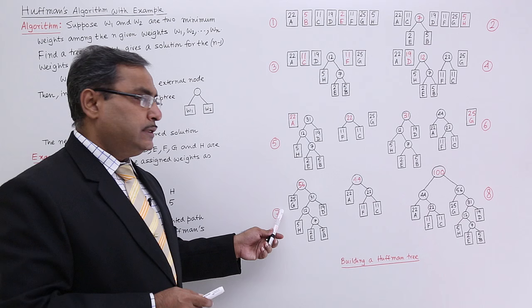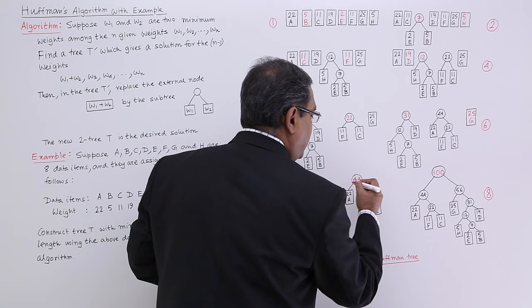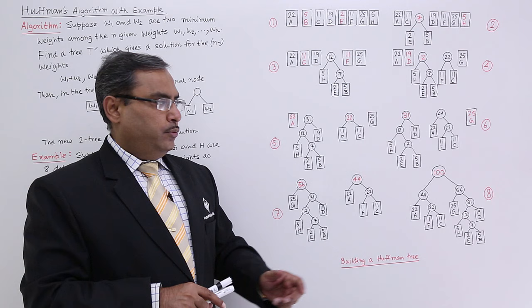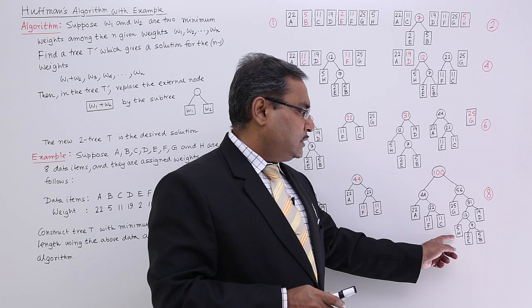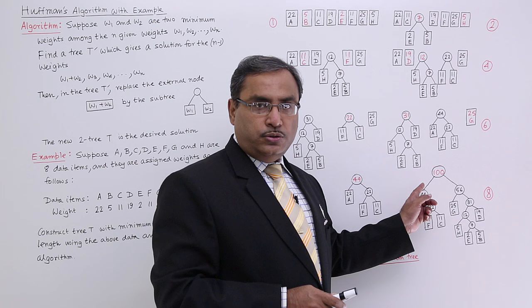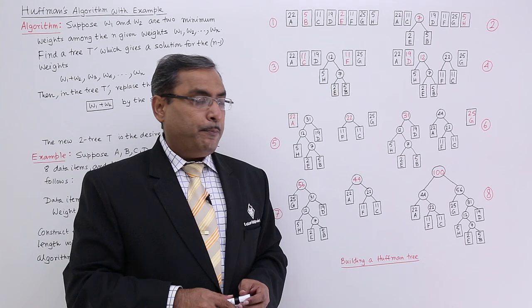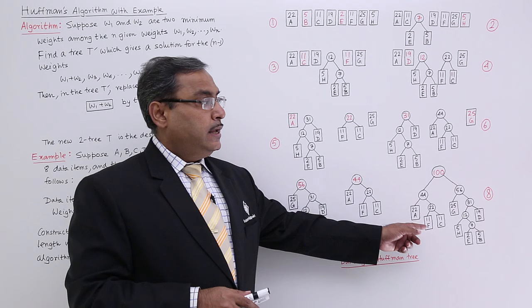Now we are having this 44 and 56. There is no other choice because only two data items are remaining. So 44 and 56, so they will be coming as 100. And in this way, this two tree or external binary tree, we have formed this one. You are getting this one that this rectangular box shaped nodes are the external nodes and this circularly enclosed nodes are the internal nodes. And this is known as two tree. In this way, you are getting this two tree which has been formed using this Huffman's algorithm. And this tree is also known as Huffman tree.